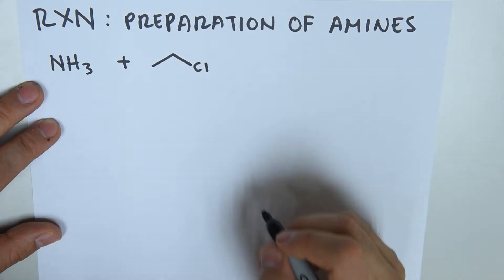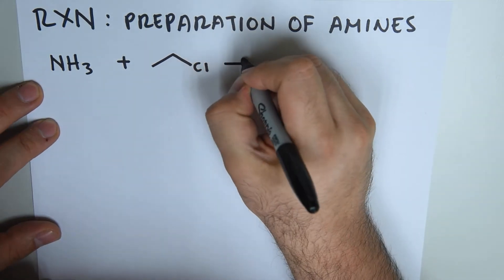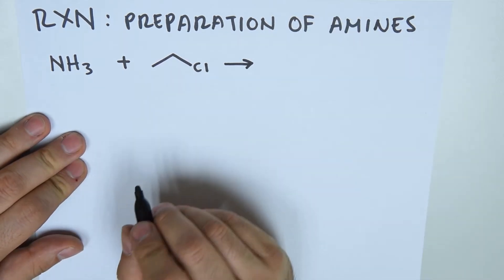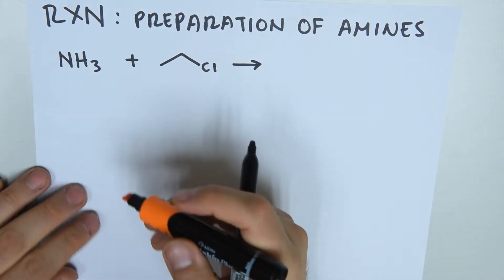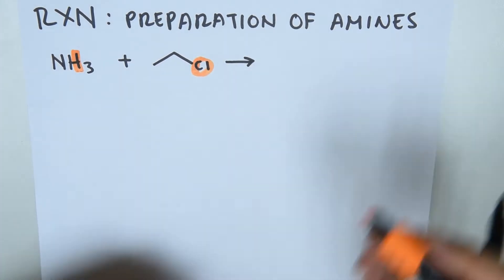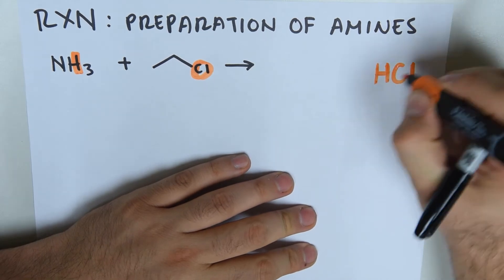But what we're going to produce is an amine and an acid. Where will the acid come from? We're going to take one of these H's and the halogen, and this is going to turn into hydrochloric acid.